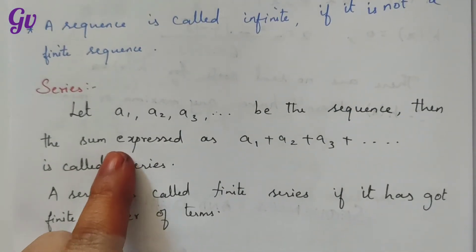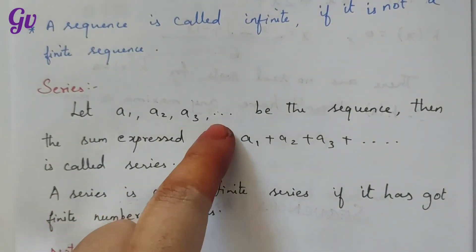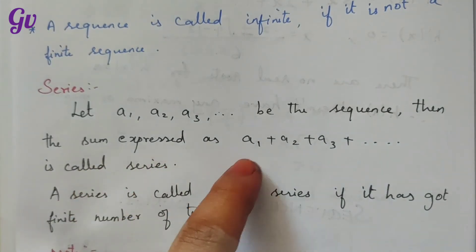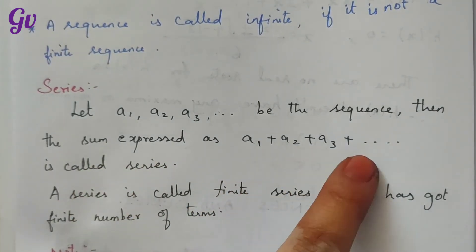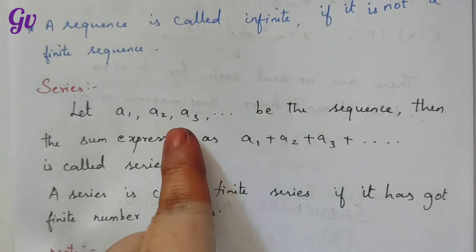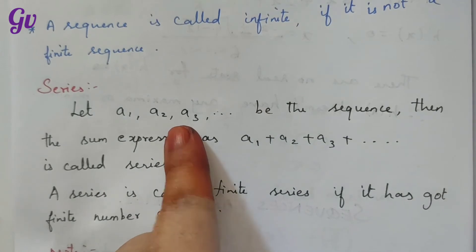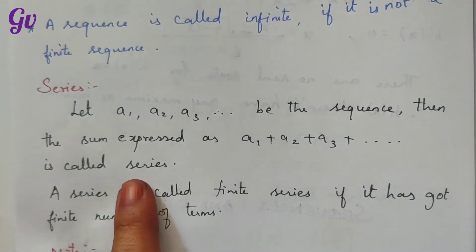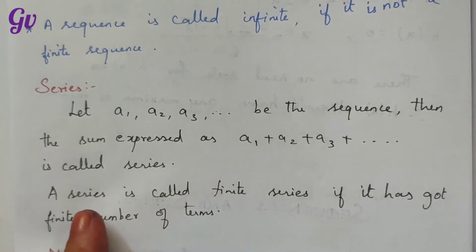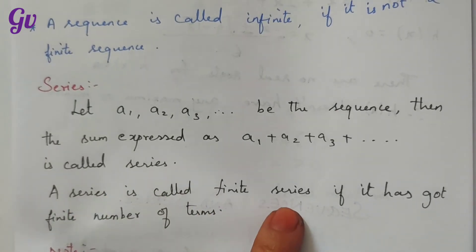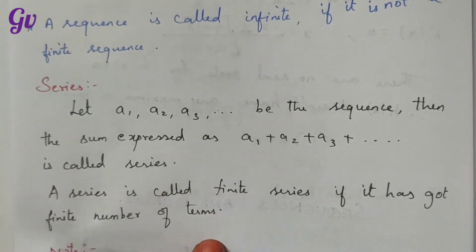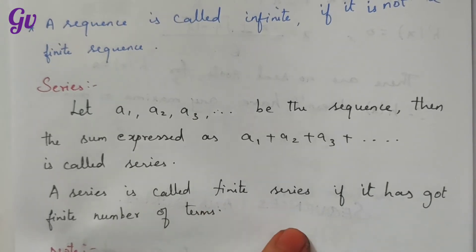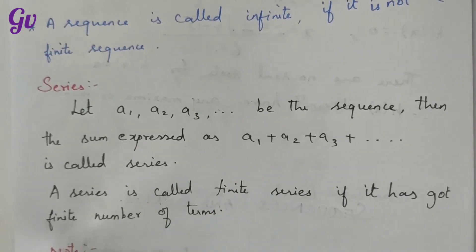The number series: let A1, A2, A3, etc. be a sequence. Then the sum expressed as A1 plus A2 plus A3 plus ... is called a series. If the sequence has a finite number of terms, then the sum is called a finite series.